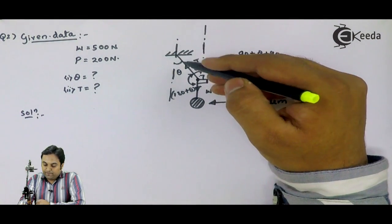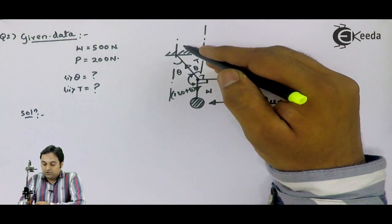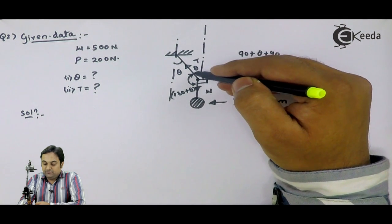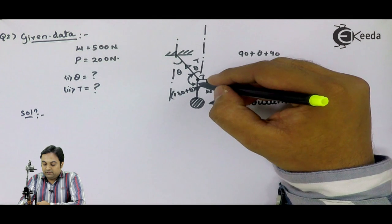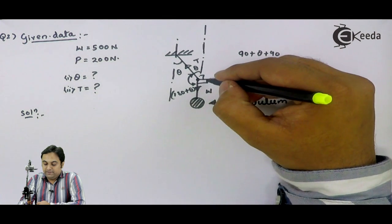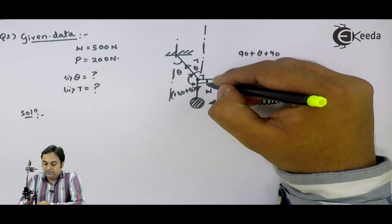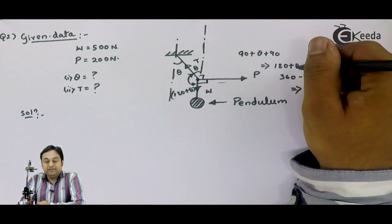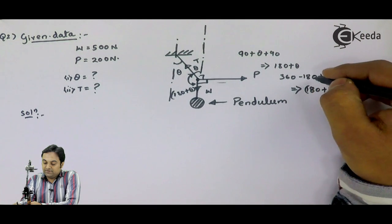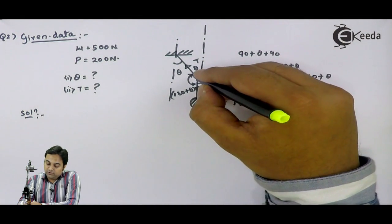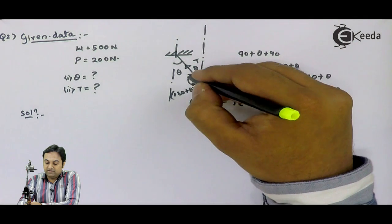If the angle made by the tension rope with the vertical is theta, then drawing a vertical line gives that same angle theta here too. The vertical and horizontal line are inclined at 90 degrees. The inclination of weight with horizontal is also 90 degrees. So that becomes 90 plus theta, and adding another 90 gives 180 plus theta from T to W. The remaining angle between T and W is therefore 180 plus theta.